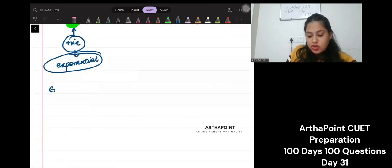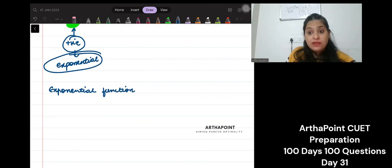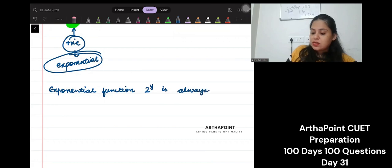Please write down. Exponential, you should always write things down. That will make you remember things. Please make a separate copy for all these CUET questions. Write them down. Practice them. Exponential function 2 to the power y is always positive.